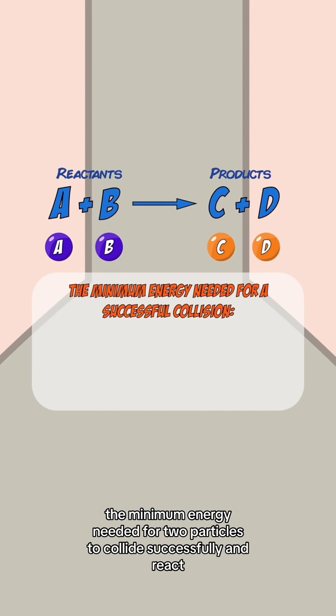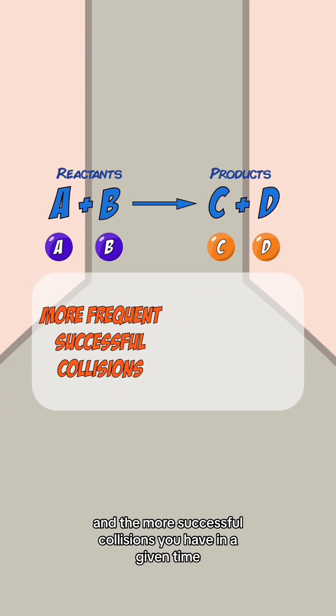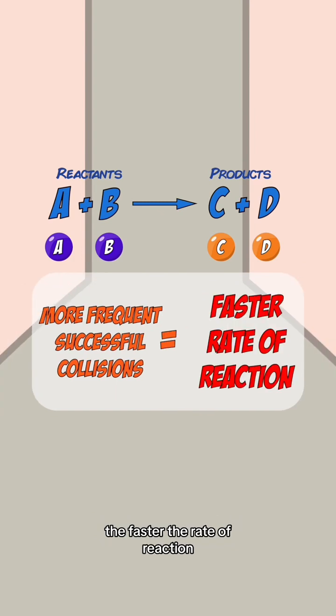The minimum energy needed for two particles to collide successfully and react is known as the activation energy. And the more successful collisions you have in a given time, the faster the rate of reaction.